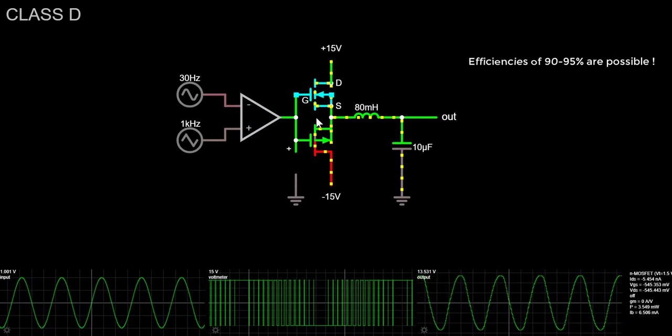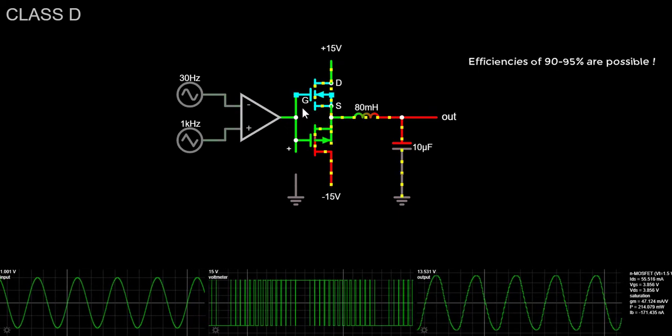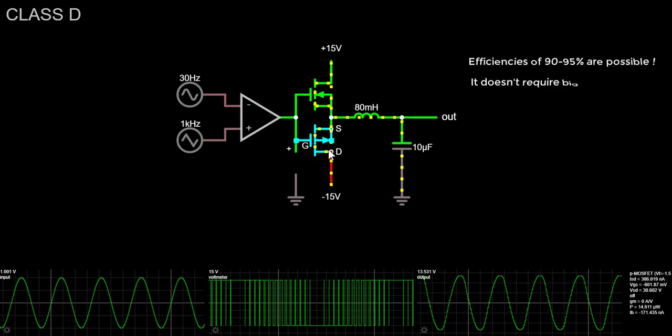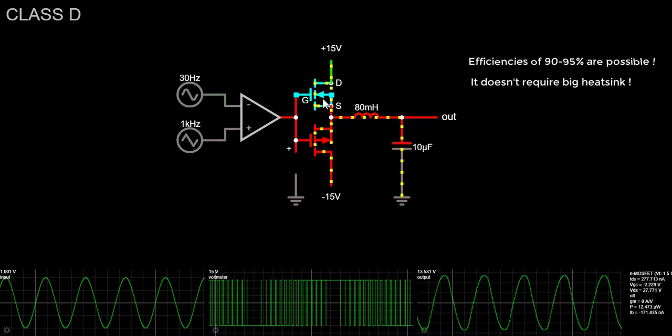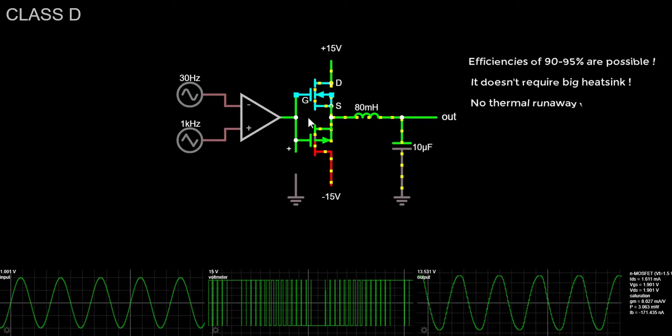Because of this, the amplifier does not generate a lot of heat and does not require a big heatsink like linear Class AB amplifiers do. There's also no worry about thermal runaway.